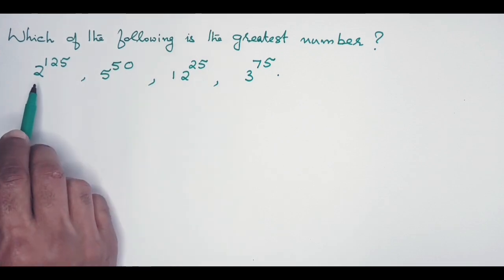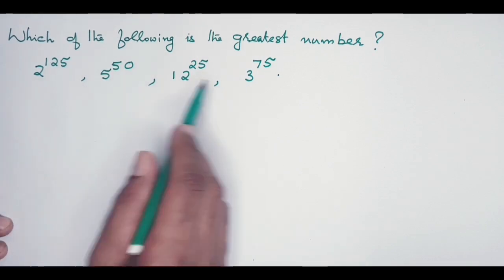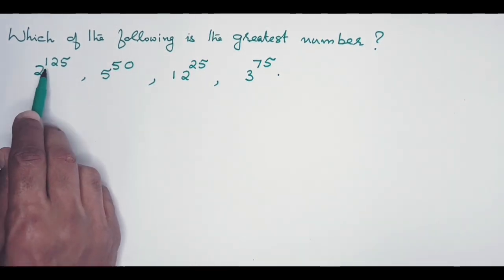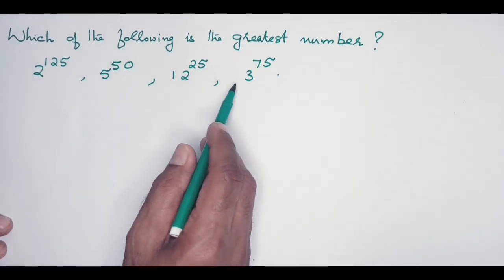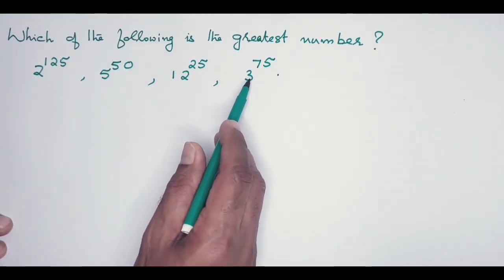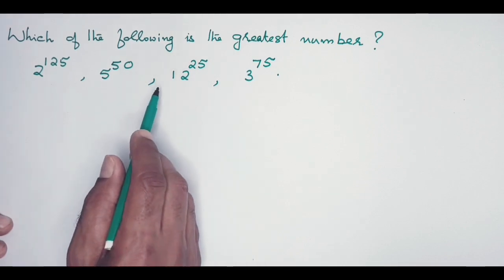So the question is this: there are four numbers in the exponential form—2 to the power of 125, 5 to the power of 50, 12 to the power of 25, and 3 to the power of 75. We are finding out the greatest of these four numbers.